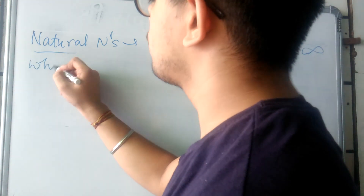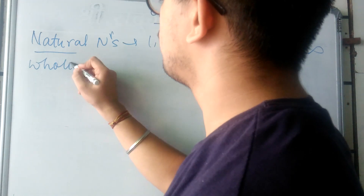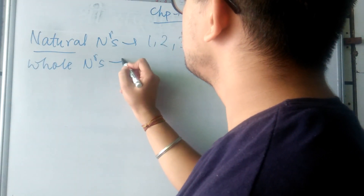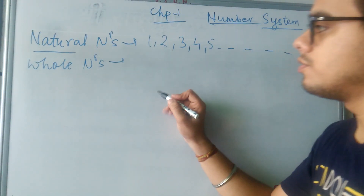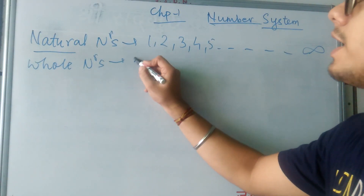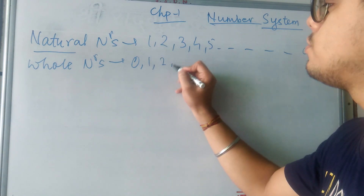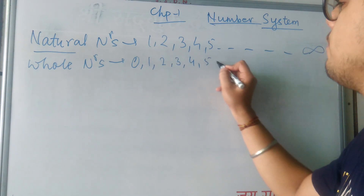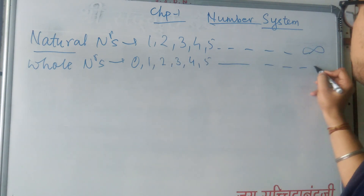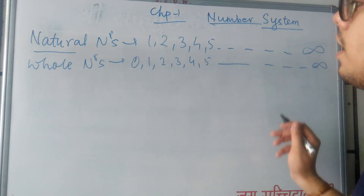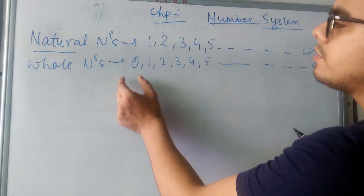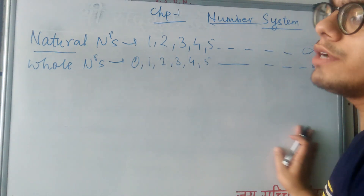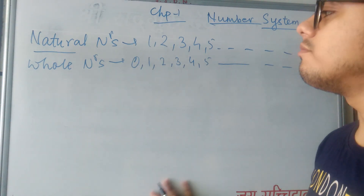Now let us see what are whole numbers. Whole numbers — when we include 0 also. We are including 0, then 1, 2, 3, 4, 5. Other than 0, all natural numbers are included in whole numbers.